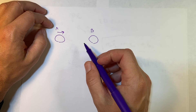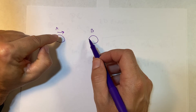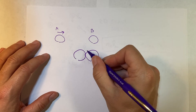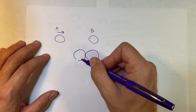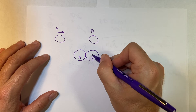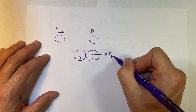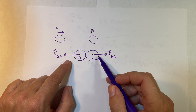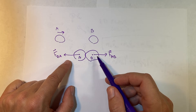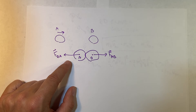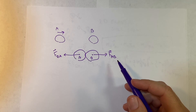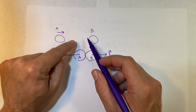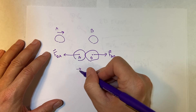Ball A is moving with some velocity and it's going to collide with ball B, which could also be moving. Now, how do I conserve momentum? There has to be a force between them when they interact. When they collide there'll be a force of A pushing on B and also a force of B pushing on A. As long as there is an equal and opposite force between them, momentum will be conserved — that's all.